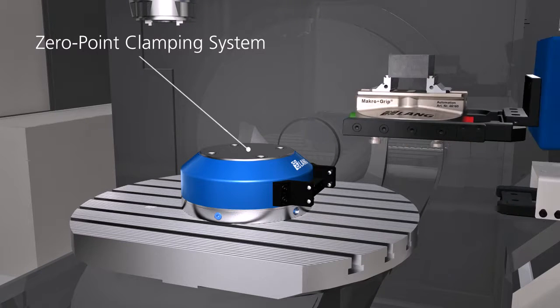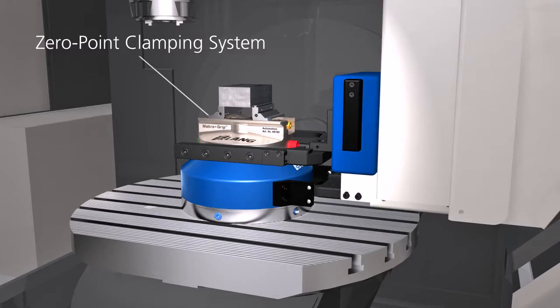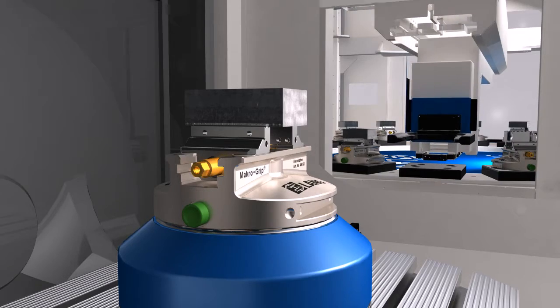A special feature in LANG automation systems is the integrated zero-point activation, which is located underneath the gripper.